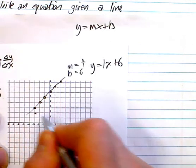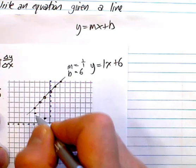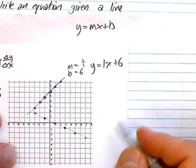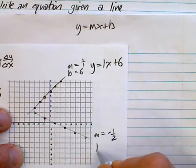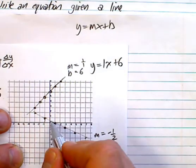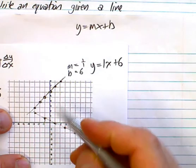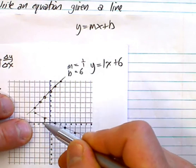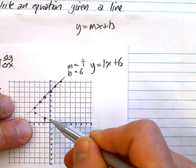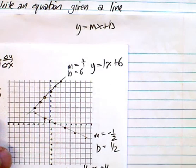Let's try another one. Here's another line. You can identify your m pretty quickly as being down 1 over 2, so negative 1 half. Your b value is a little bit trickier to see, but it's actually 1 half — because if you go down 1 over 2, you go down a half over 1, which means you're up a half right here. And then we simply plug them in: y equals negative 1 half x plus 1 half.